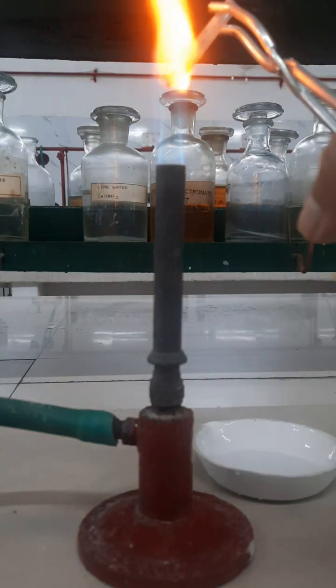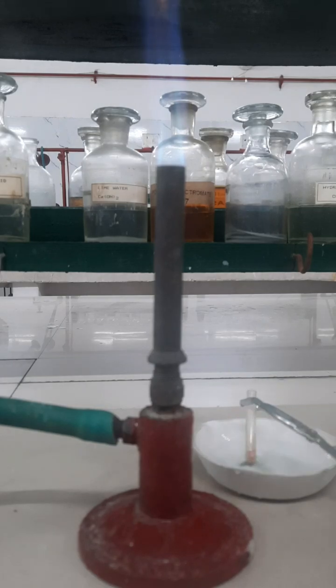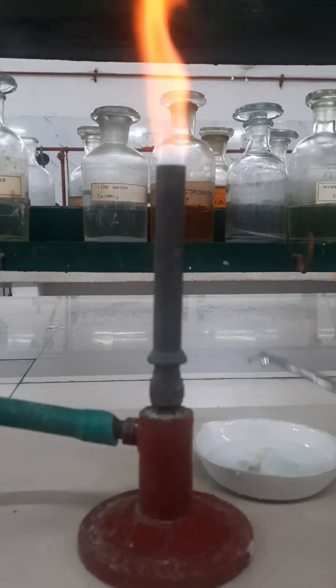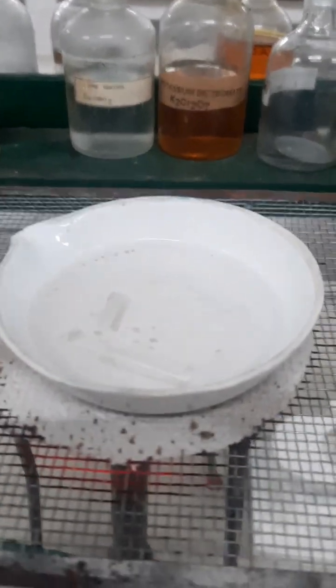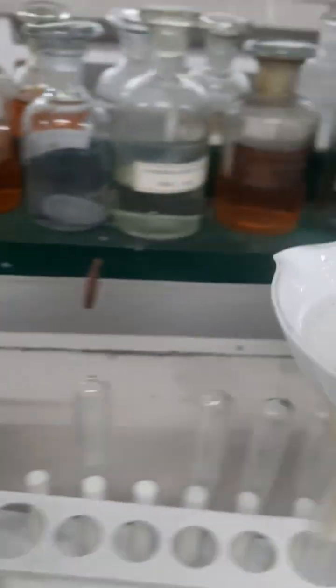Then I am heating strongly and transferring this hot ignition tube into the china dish containing a few ml of distilled water. Boil the content over the burner and filter it with the help of funnel and filter paper.